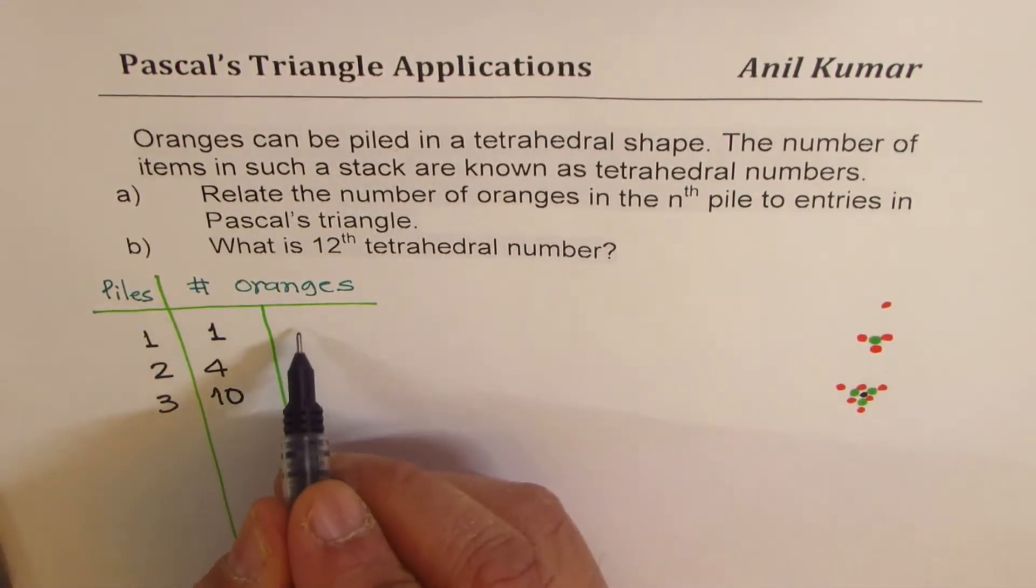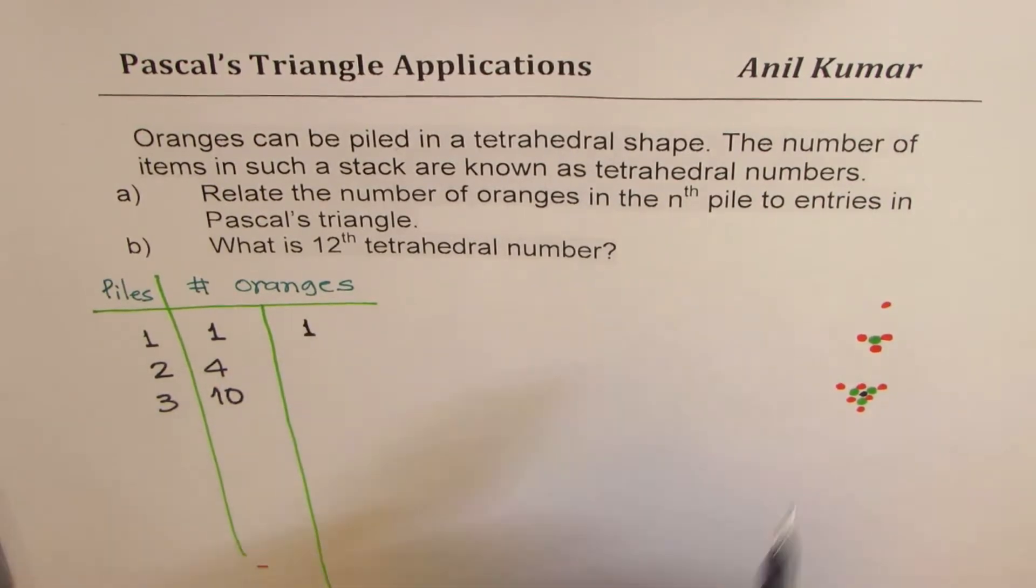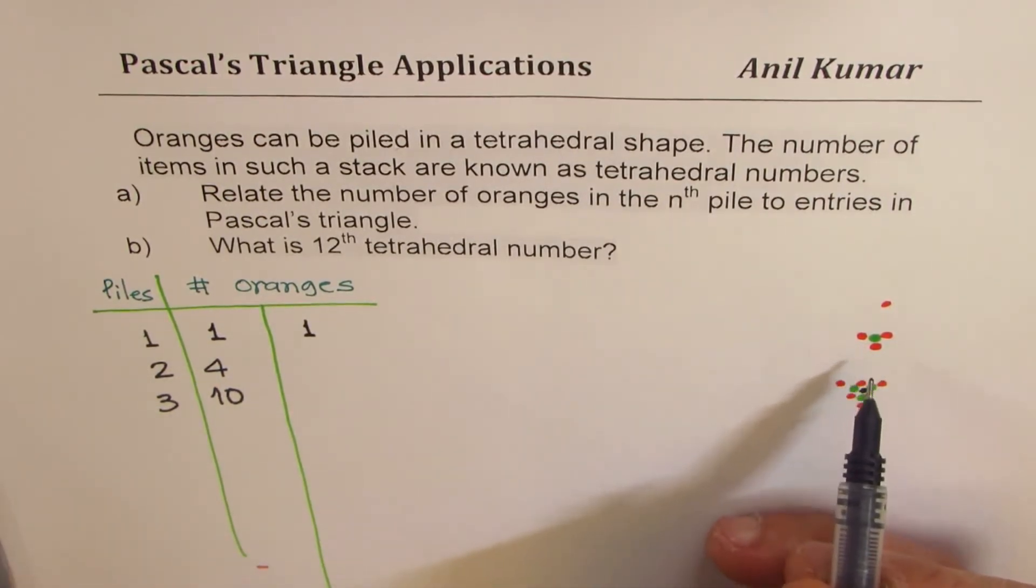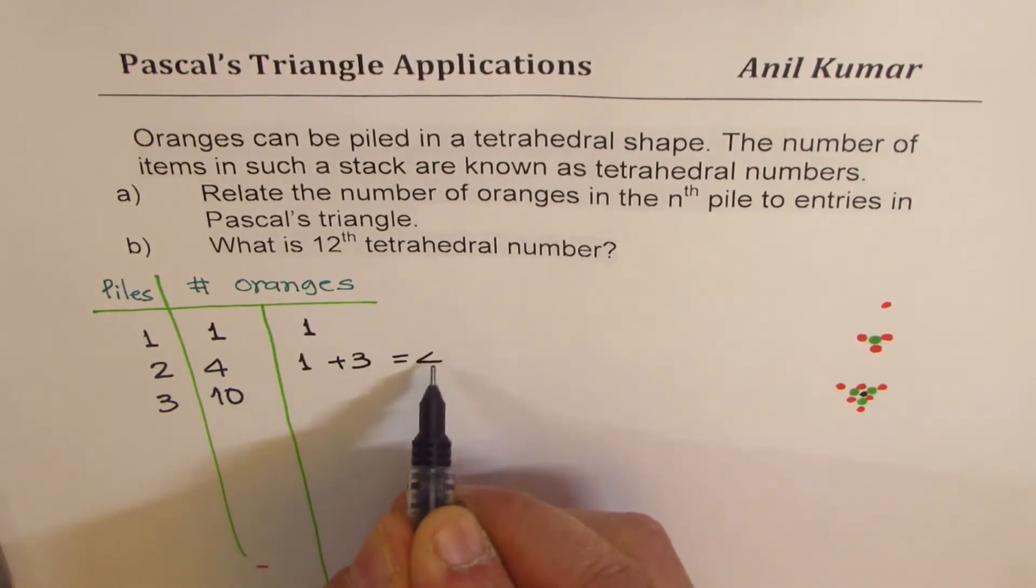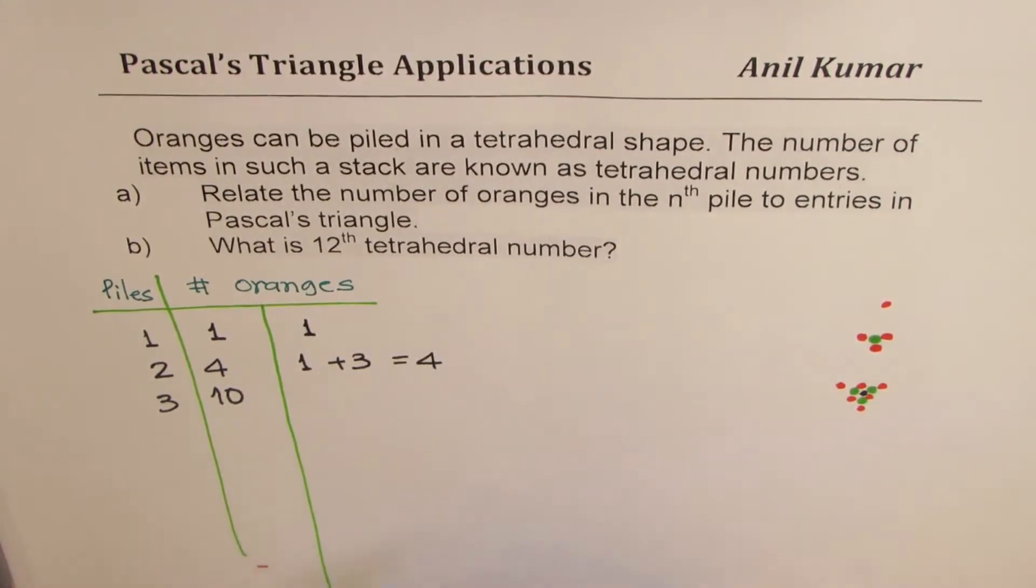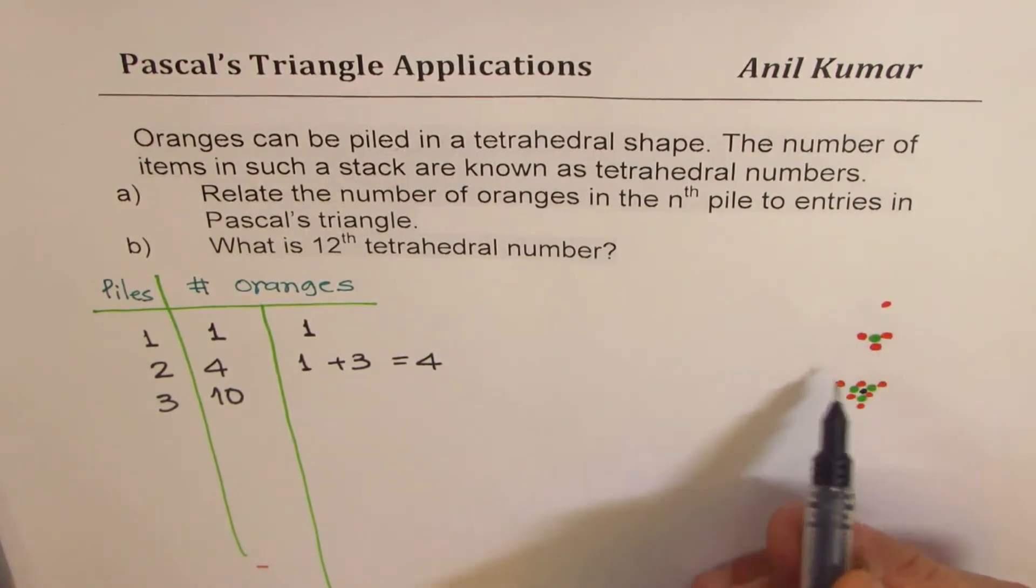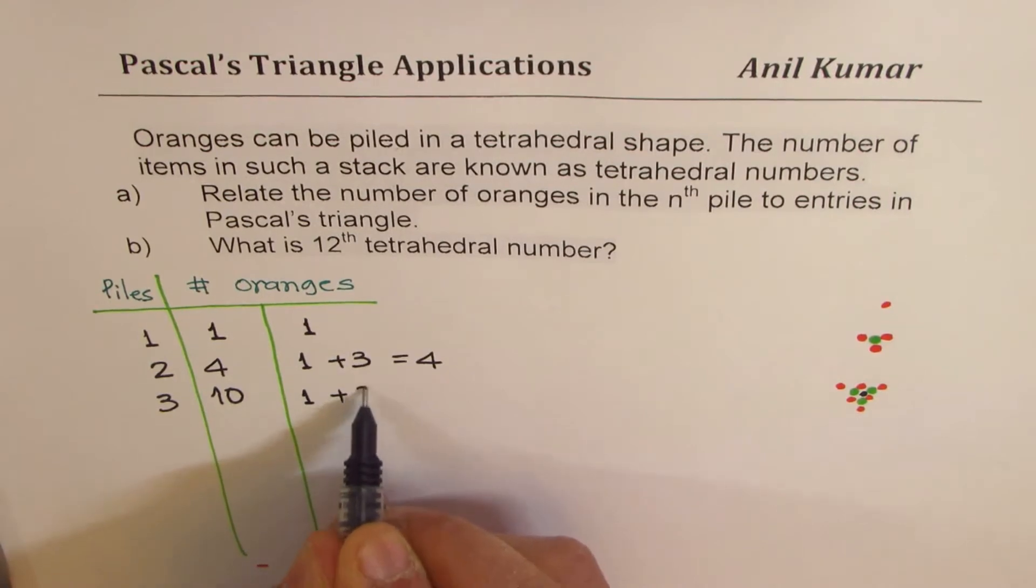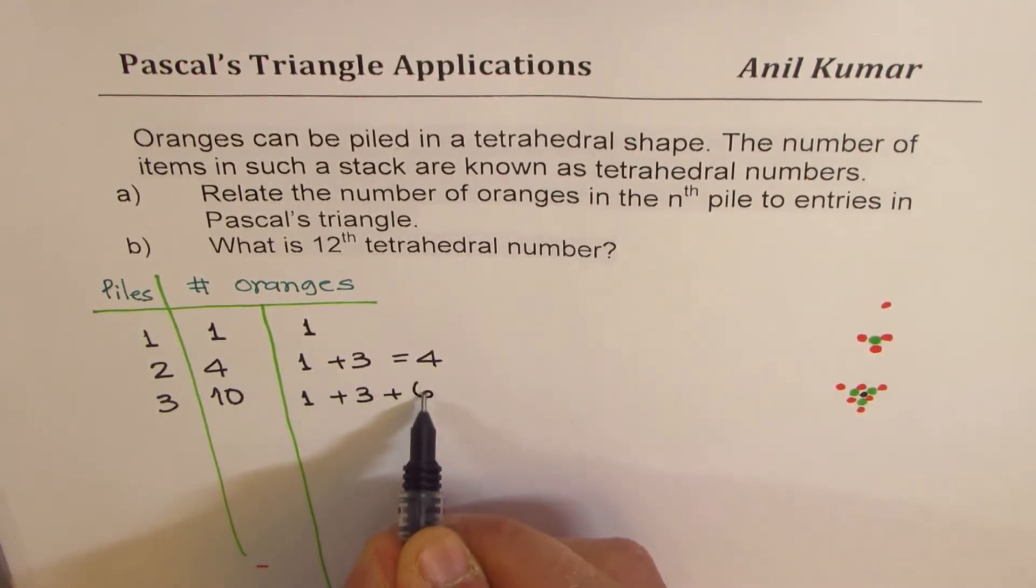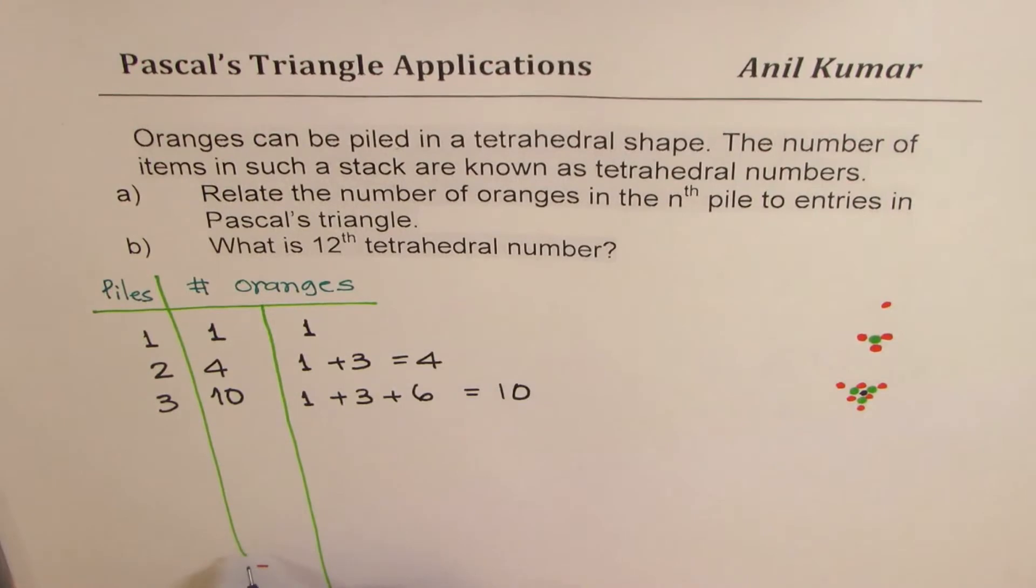First, we had just one to begin with. Then we had three plus one or one plus three. So we had one plus three. That gave us the number four. And after that we added six to them. So we get one plus three plus six, and that gave us the number ten.